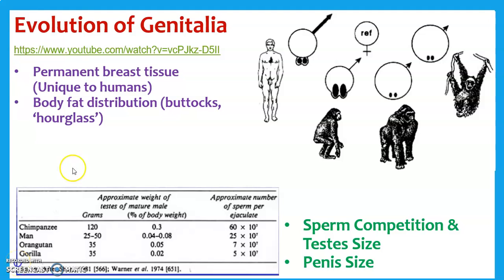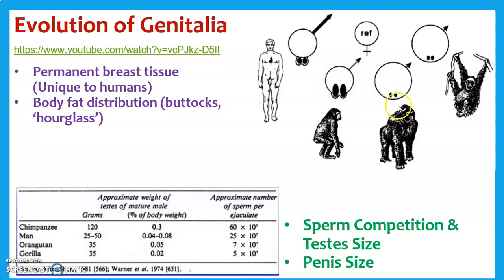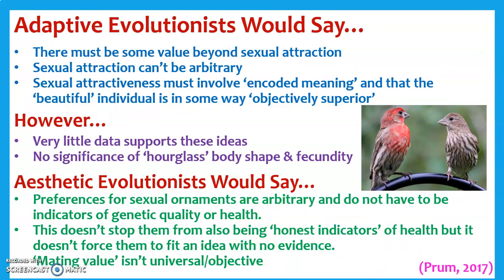Now we're going to look at primates as our closest living relatives. We obviously can't look at other hominids since they've gone extinct — Neanderthals, Homo erectus, Homo habilis. We'll look especially at chimpanzees and bonobos. What we do see is an increase in penis size — the primates with the largest penis, even corrected for body size, is still the biggest. We also have a kind of in-between testes size. Chimpanzees have really big testes compared to ours; gorillas and orangutans have really small testes. We'll talk about sperm competition too.